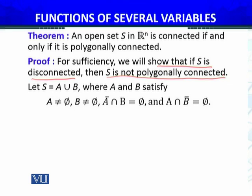So, I will be able to find two non-empty sets A and B such that S equals A union B where A and B satisfy these conditions. A not equals empty set, B not equals empty set, and limit points of A are not in B. Mathematically, A̅ ∩ B = ∅ and limit points of B are not in A, A ∩ B̅ = ∅. This is the definition we made in the last module.